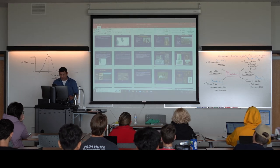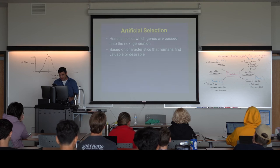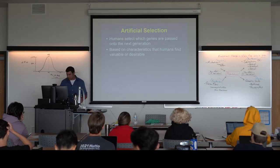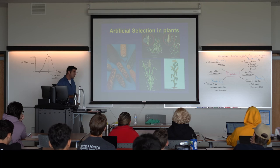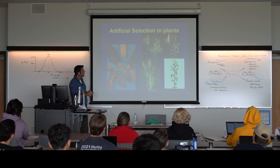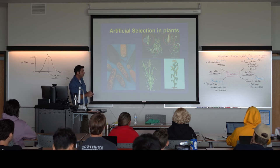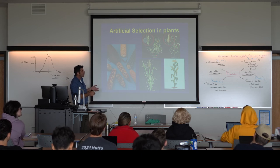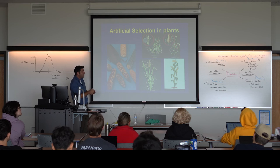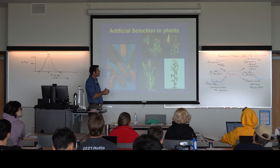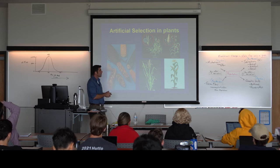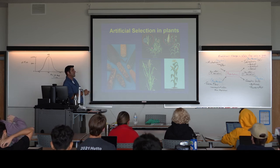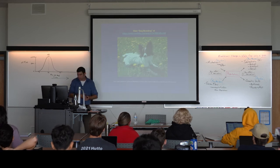Let's look at artificial selection — a case where humans, not the habitat, determine which genes are beneficial. This is done with dog breeding and also with agricultural crops. Here's a picture of the ancestor to corn called the teosinte plant — it's grassy-like with maybe 10 corn kernels total. But over thousands of years of selection for the highest yield, we've ended up with our modern corn plant, which doesn't even closely resemble the wild teosinte plant anymore.